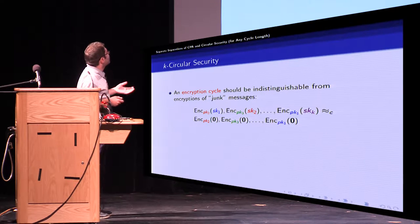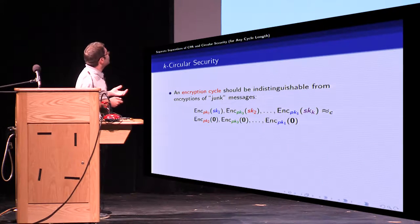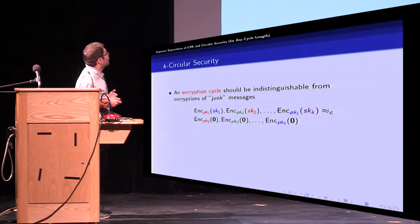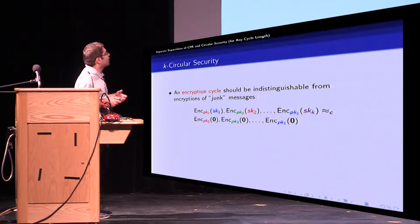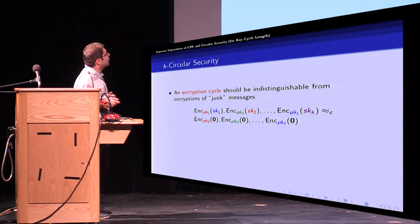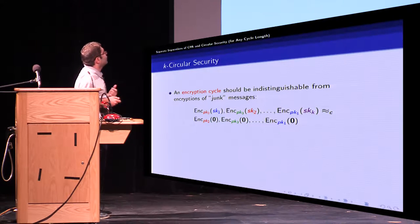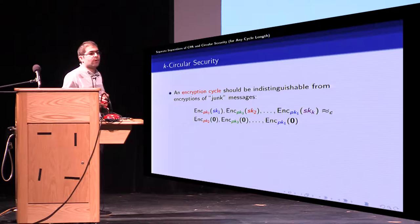We say that the public encryption scheme is K-circular secure if an encryption cycle is indistinguishable from encryption of junk messages. So in other words if you encrypt first secret key under the second public key, second secret key under the third public key and so forth and then cycling back, K-th secret key under first public key should be indistinguishable from encryption of all zeros.